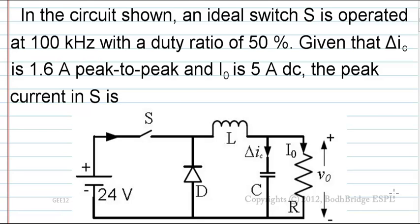In the circuit shown, an ideal switch S is operated at 100 kHz with a duty ratio of 50%. Given that Delta IC is 1.6A peak-to-peak and I0 is 5A DC, the peak current in S is